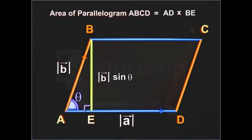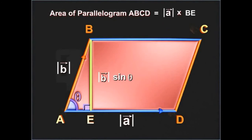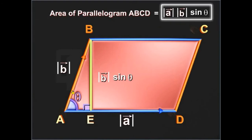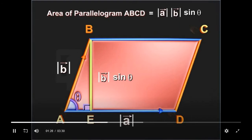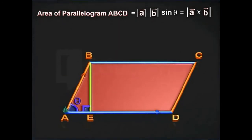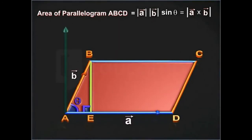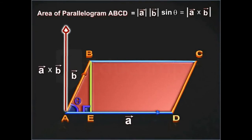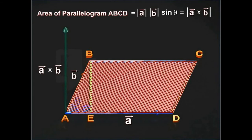The area of the parallelogram is magnitude of vector A into magnitude of vector B into sin theta. This value of area is equal to the magnitude of vector A cross vector B. This helps us to conclude that vector A cross vector B is a vector having magnitude equal to the area of the parallelogram ABCD.